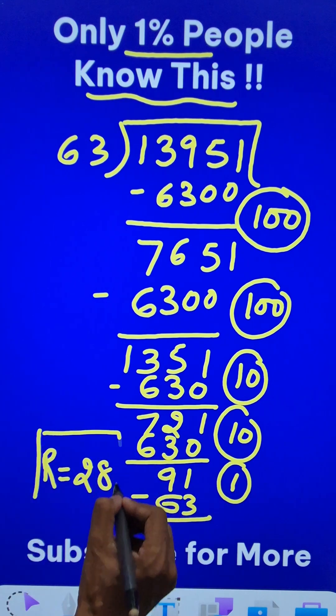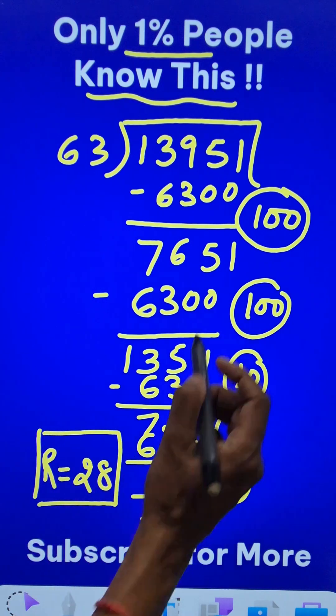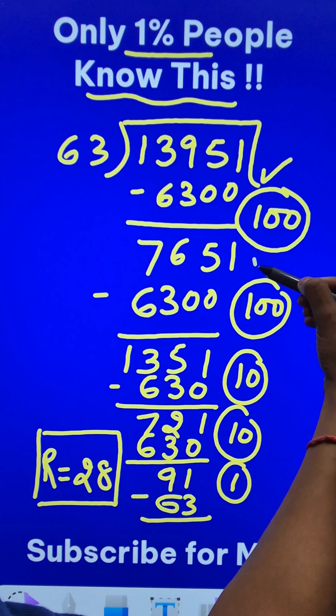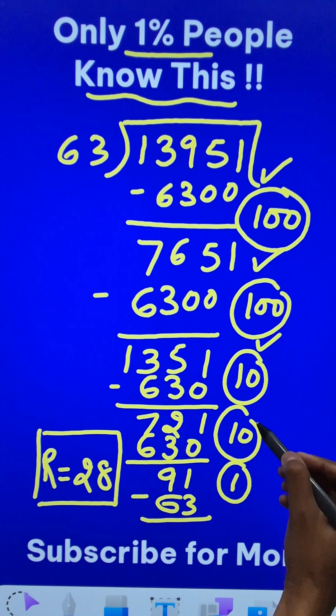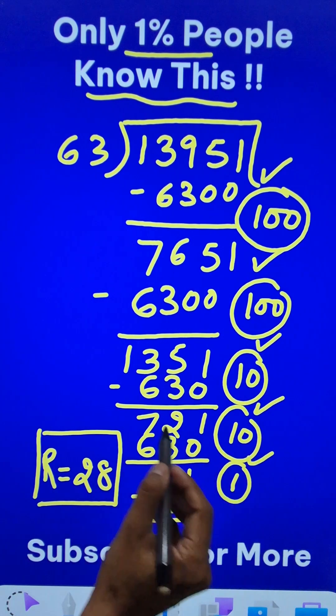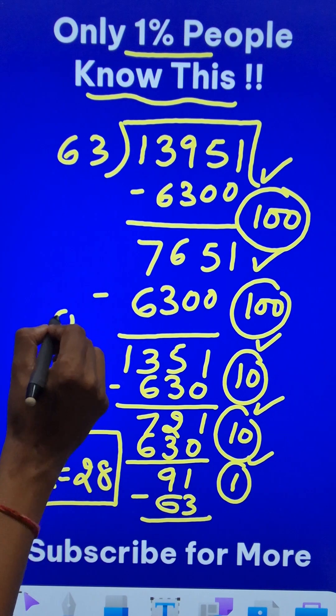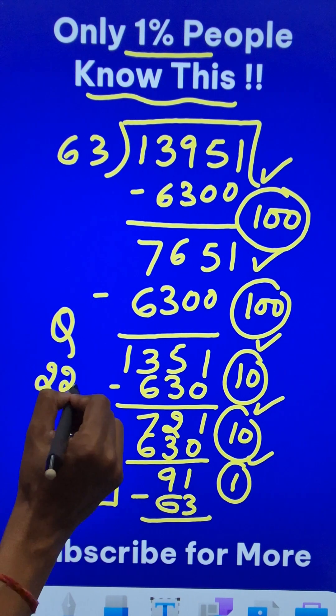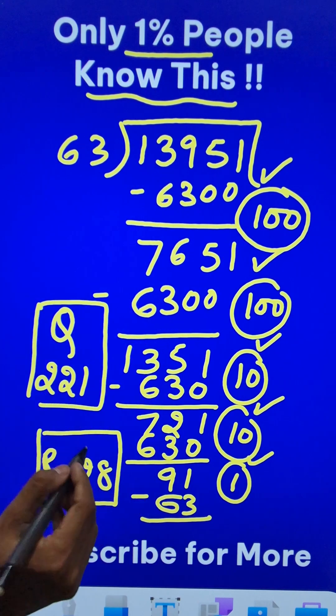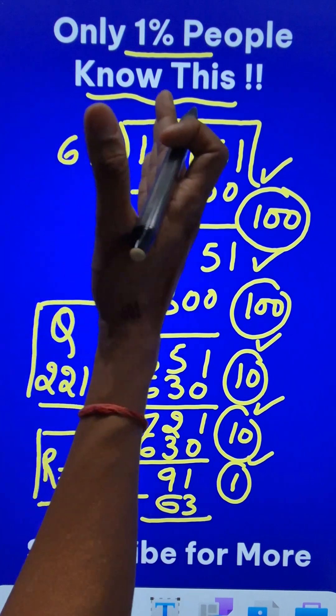What is the quotient? The remainder obviously is 28. Look at all these partial quotients: 100, 200, 210, 220, 221. So, when you divide this number by 63, the quotient which will come out is 221 and the remainder is 28. You can check it using the traditional approach.